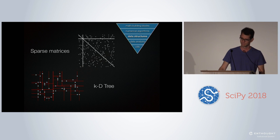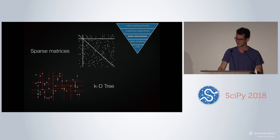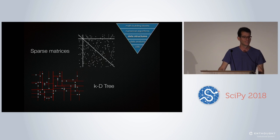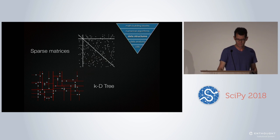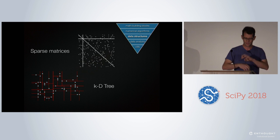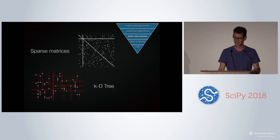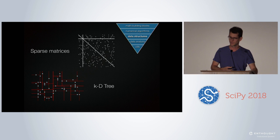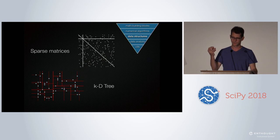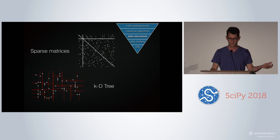This is mainly an important data structure because large parts of scikit-learn are built on it. The scikit-learn guys help us maintain it as well, which is very useful. The second one is KD trees. If you have a bunch of points unstructured in space and you want to write some algorithms where you need to know, say, the ten closest points for every point, that's when you would use something like a KD tree.